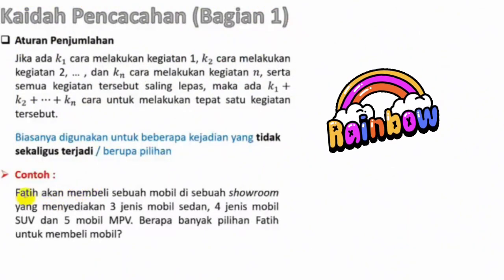Fatih akan membeli sebuah mobil di sebuah showroom yang menyediakan 3 jenis mobil sedan, 4 jenis mobil SUV, dan 5 mobil MPV. Berapa banyak pilihan Fatih untuk membeli mobil tersebut? Nah, disini Fatih akan membeli hanya sebuah, jadi tidak mungkin dia memilih semuanya. Ini berupa pilihan.